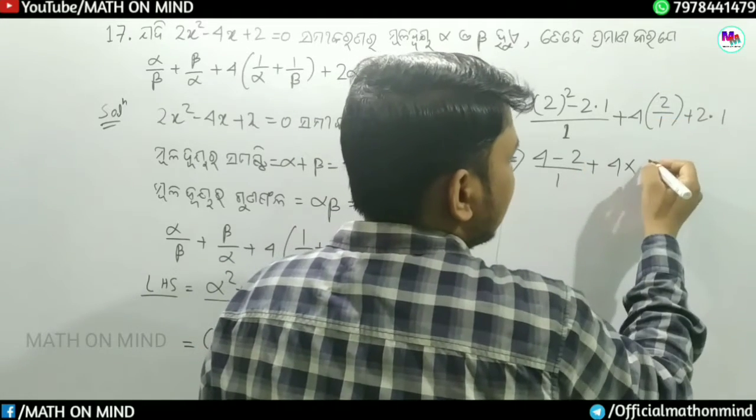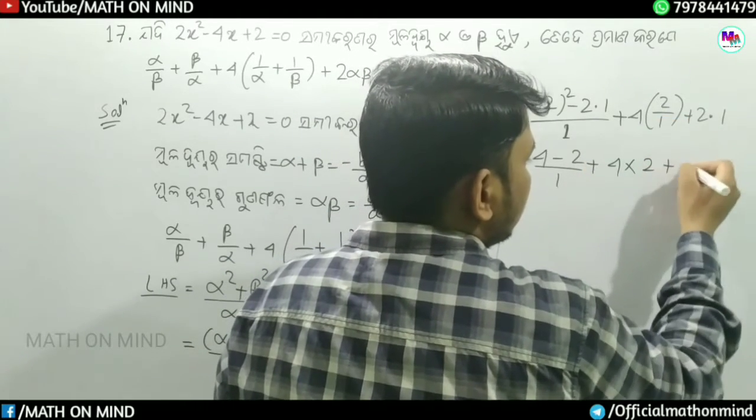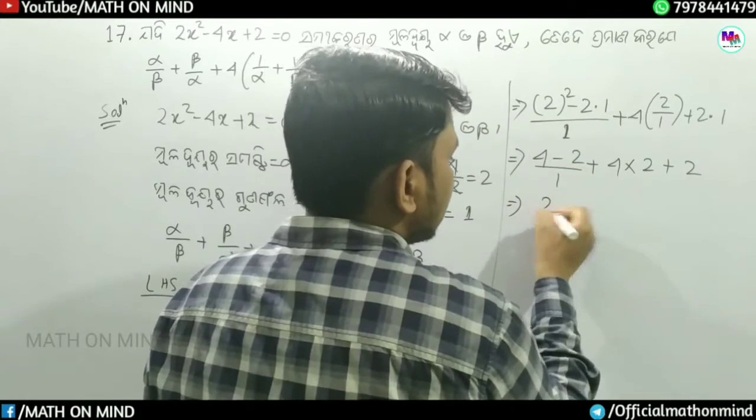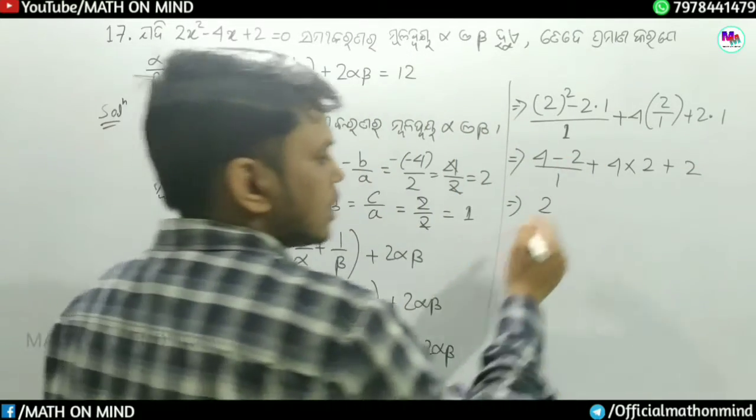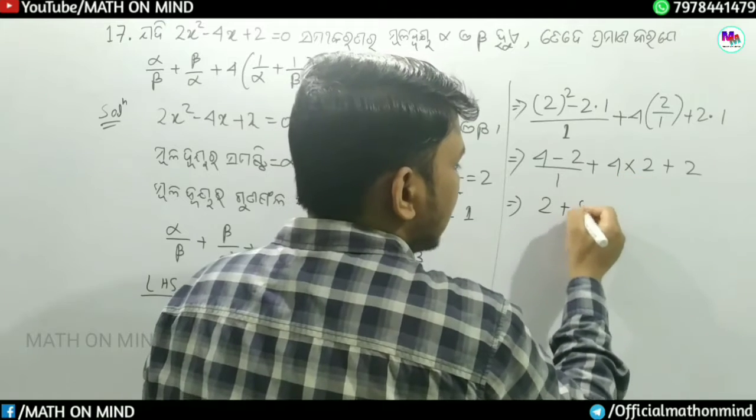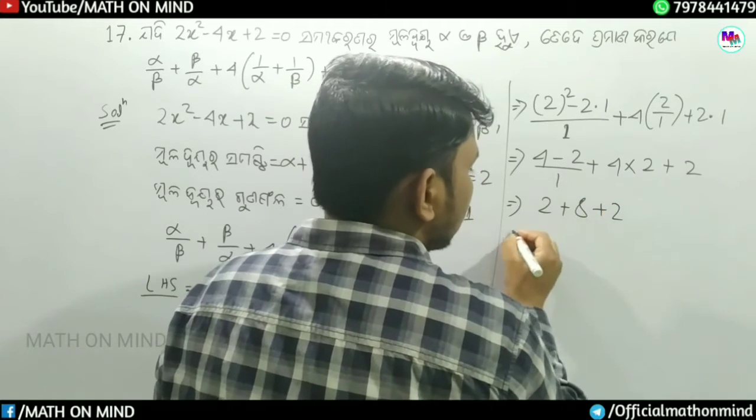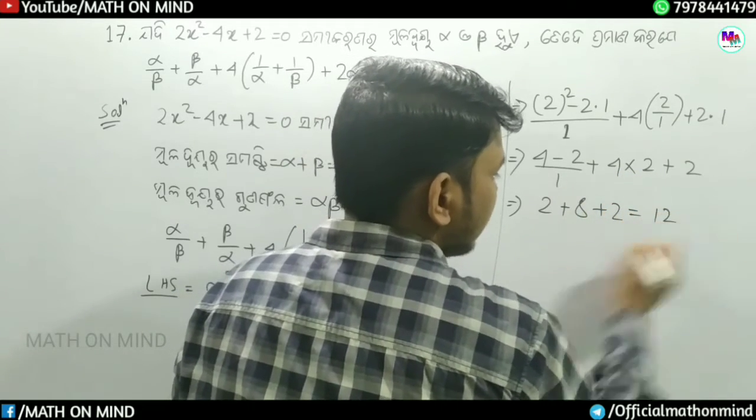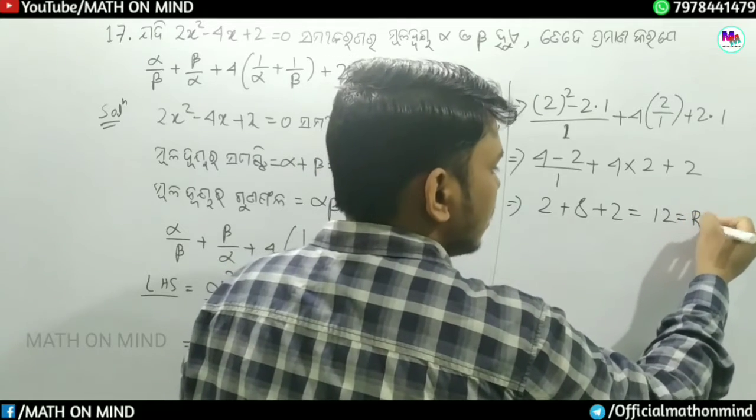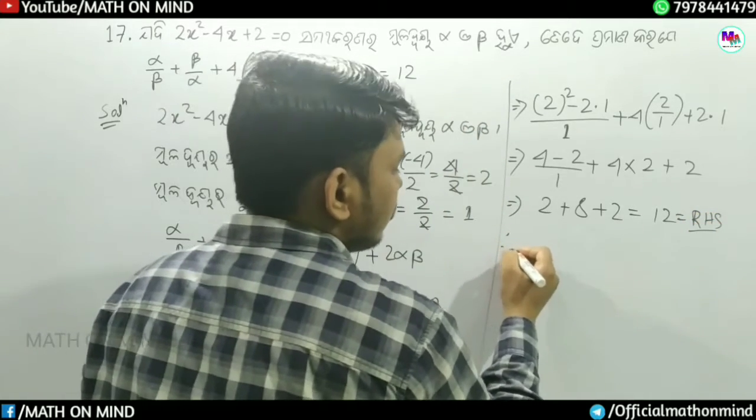2 divided by 1, we get 2, plus 2 is equal to the answer, 4.